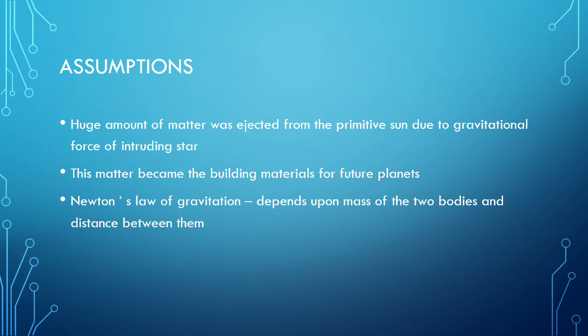A huge amount of matter was ejected from the primitive sun due to the gravitational force of the intruding star. Due to this greater gravitational force, large matter was ejected from the primitive sun. This matter became the building material for future planets — from the primitive sun, large matter is ejected and it becomes planets later.